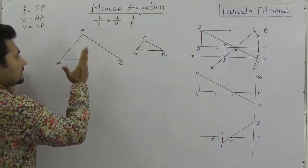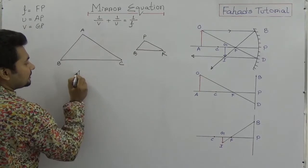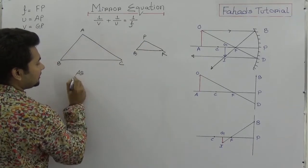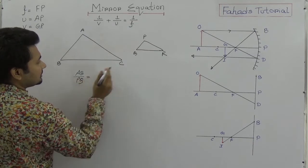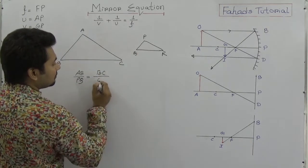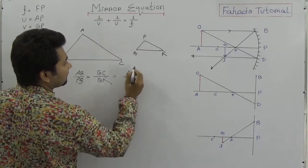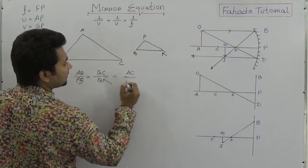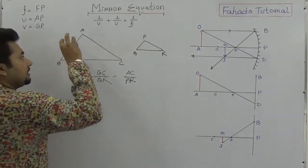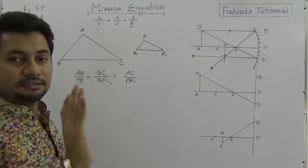If these two triangles are similar, we can say that AB/PQ = BC/QR = AC/PR. If triangle ABC and triangle PQR are similar, we can say that the ratio of corresponding sides are equal.